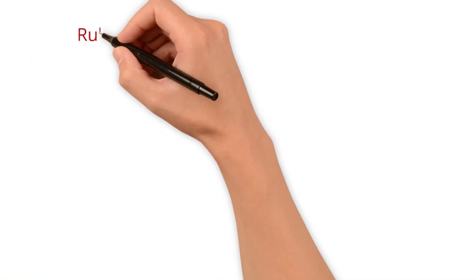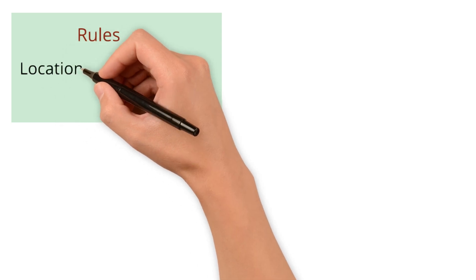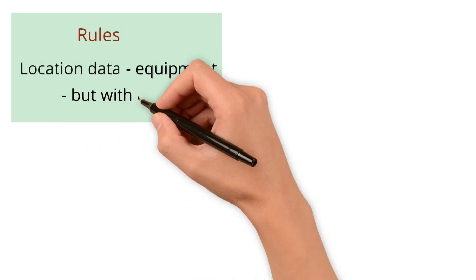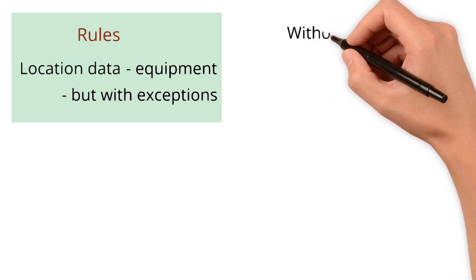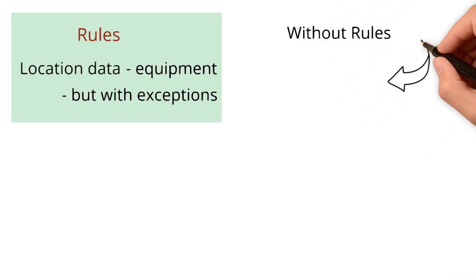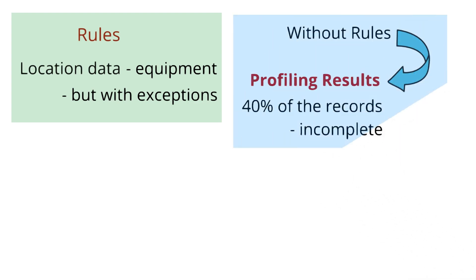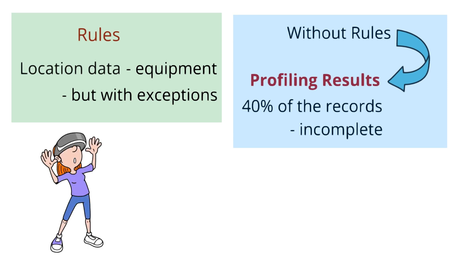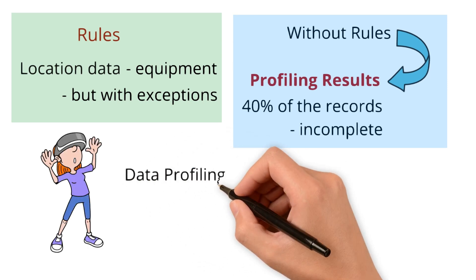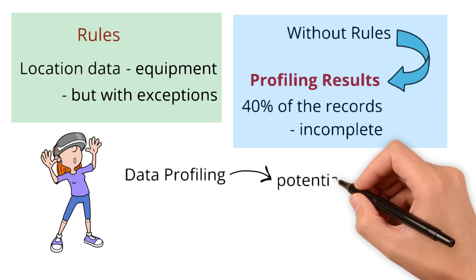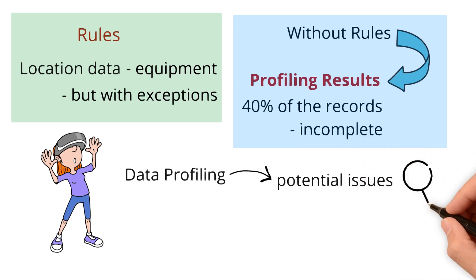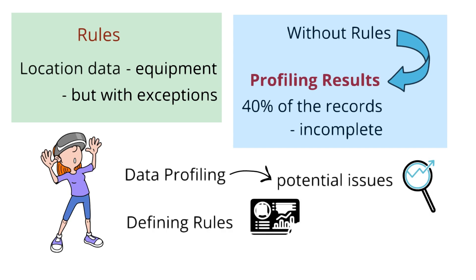This is why we define rules. In this case, we'd create a rule saying location data is required for equipment, but with exceptions for certain cases. Without these rules, the profiling results would make it seem like 40% of the records were incomplete. But in reality, those missing locations were valid. So while data profiling helps us spot potential issues, it does not give us a full data quality assessment on its own. Defining these rules gives us a clearer, more accurate picture.